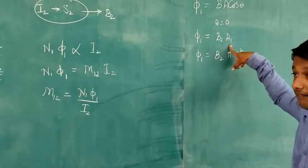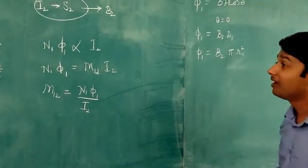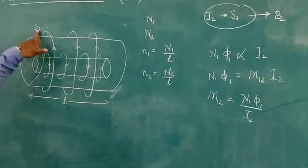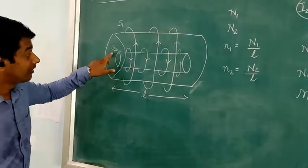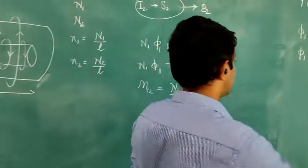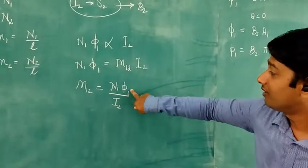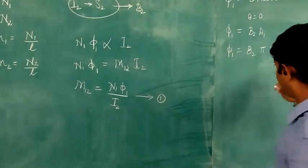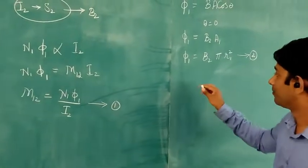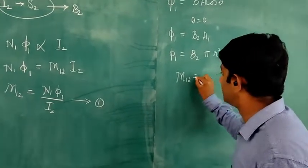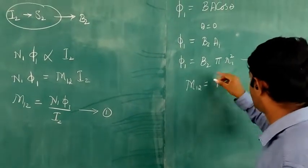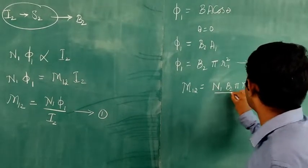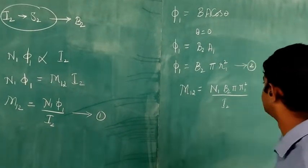The radius R1 is the radius of solenoid S1 and R2 is the radius of solenoid S2. Taking equation 1 (M12 = N1φ1/I2) and equation 2 (φ1 = B2πR1²), substituting equation 2 into equation 1 gives: M12 equals N1 × B2 × πR1² divided by I2.